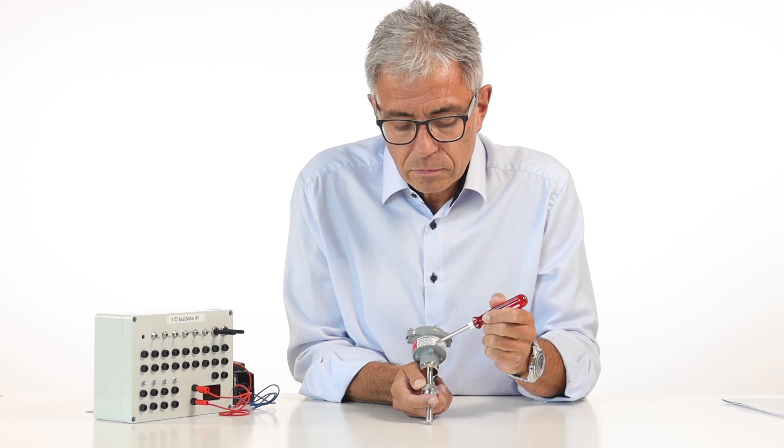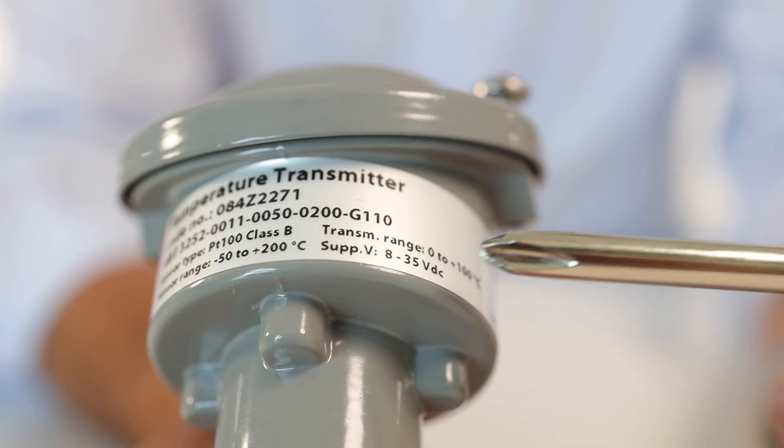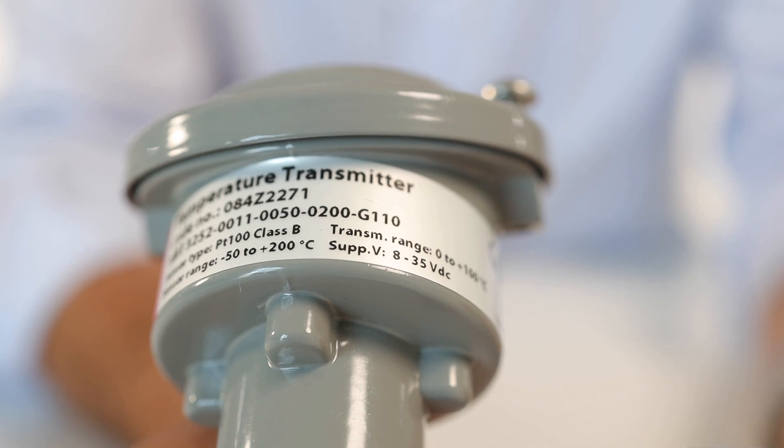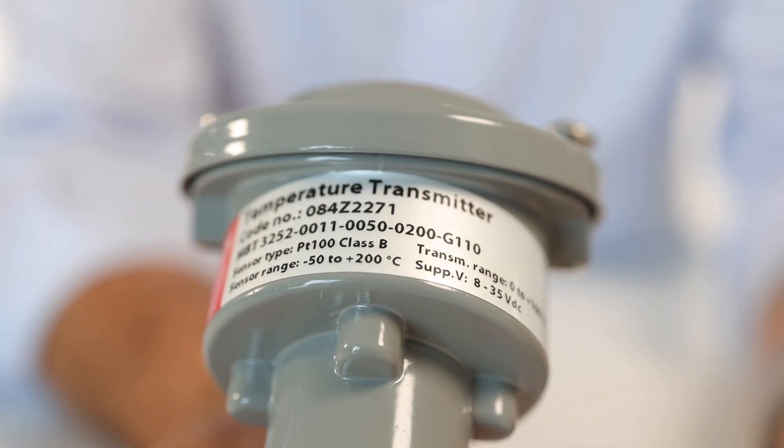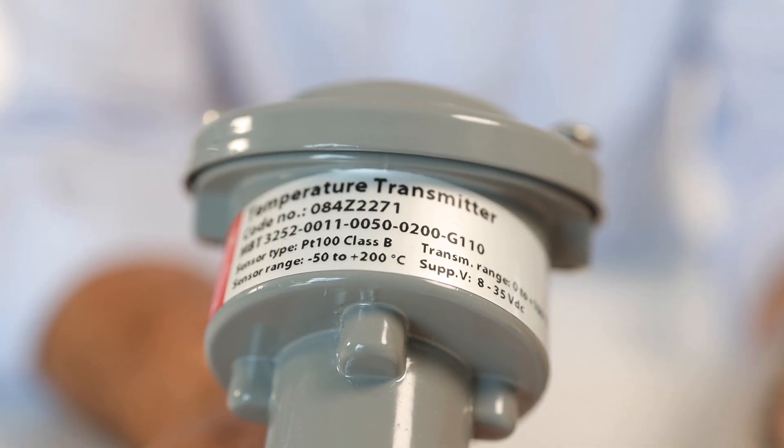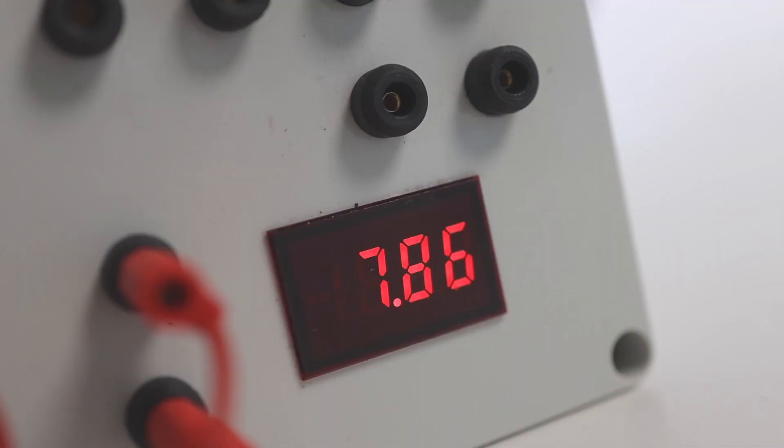We'll demonstrate how to install a Danfoss temperature transmitter with 8 to 35 volt DC and an output signal of 4 to 20 milliamps. To read the output, we'll use a milliamp display.